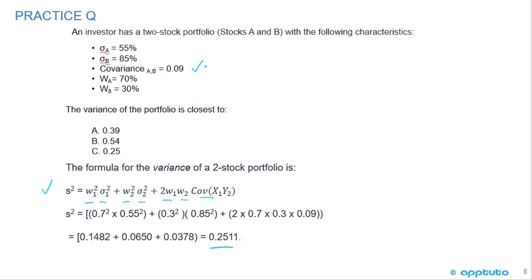They gave us the covariance as 0.09. The only trick is that they gave us standard deviations for stocks A and B, so you need to square them to get the variance. The calculation is: 0.7 squared times 0.55 squared, plus 0.3 squared times 0.85 squared, plus 2 times 0.7 times 0.3 times 0.09. When you work it out, you get 0.2511, so the correct answer is C, closest to 0.25%.